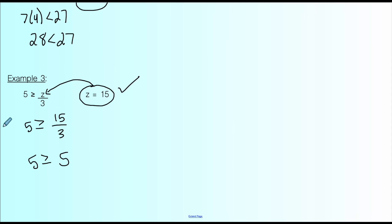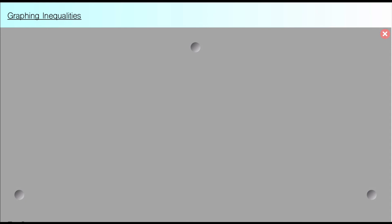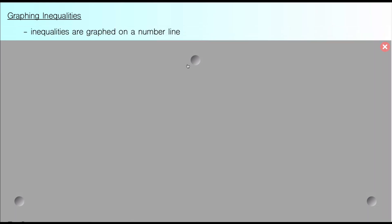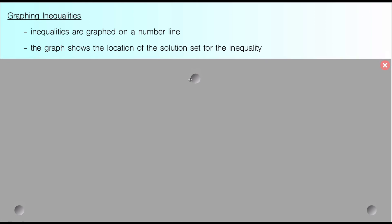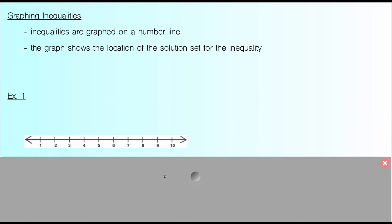The last thing we're going to do today is look at graphing inequalities. It might seem like it's going to be a lot of work, but it's not as bad as it sounds. Inequalities are graphed on a number line — thankfully not the x-and-y-axis graph you might be thinking of. We're just making a simple number line, and the graph will show where all of the solutions are. There are four different types of graphs depending on which symbol you have.